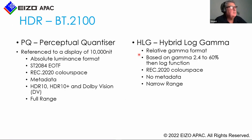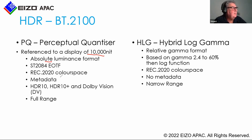There are two basic systems: the PQ — perceptual quantizer — and HLG. The PQ is referenced to a display of 10,000 nits and is an absolute luminance format. This is totally different to how we've operated in the Rec.709 world, using the ST-2084 EOTF. The other key point about PQ is it uses metadata. You must keep these two points in mind when doing HDR productions. HDR10, HDR10+, and Dolby Vision are all subsets of the PQ system.